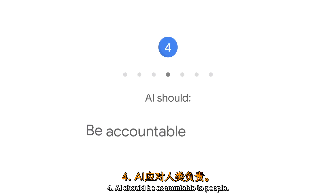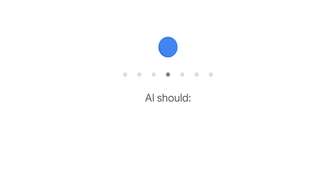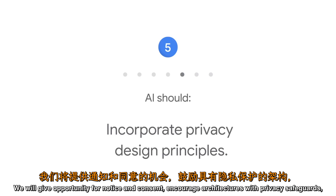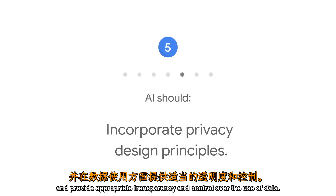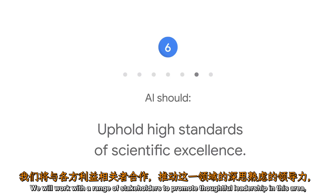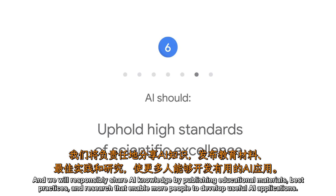Principle 4: AI should be accountable to people. We will design AI systems that provide appropriate opportunities for feedback, relevant explanations, and appeal. Principle 5: AI should incorporate privacy design principles. We will give opportunity for notice and consent, encourage architectures with privacy safeguards, and provide appropriate transparency and control over the use of data. Principle 6: AI should uphold high standards of scientific excellence. We will work with a range of stakeholders to promote thoughtful leadership in this area, drawing on scientifically rigorous and multidisciplinary approaches, and responsibly share AI knowledge by publishing educational materials, best practices, and research that enable more people to develop useful AI applications.